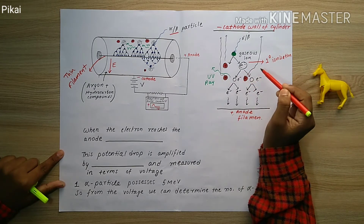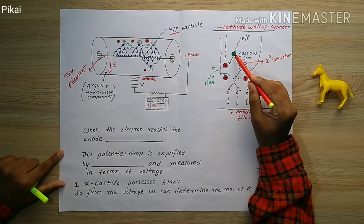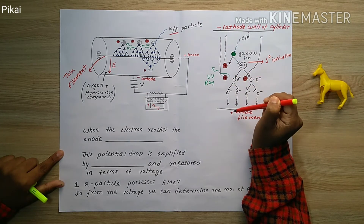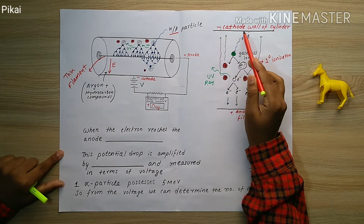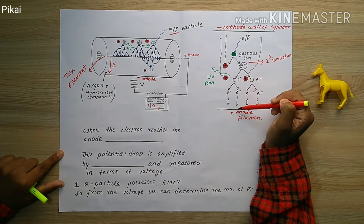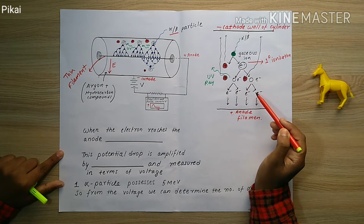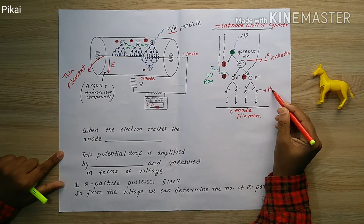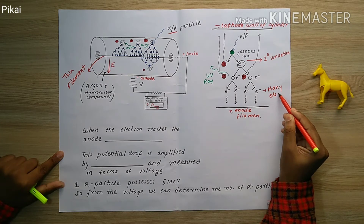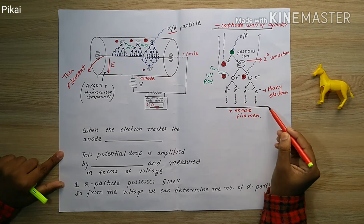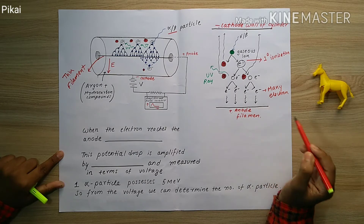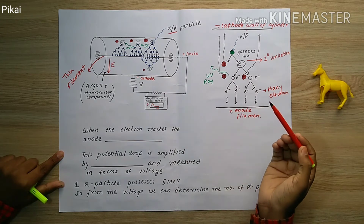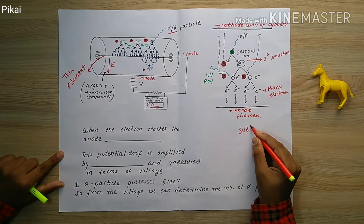After primary ionization, one cation and one electron are liberated. The cation, being positive, is attracted to the negative cathode wall of the cylinder. The negative electron moves to the positive anode filament. This chain of reactions causes excitation of electrons from one ion to another, so the number of ionizations increases hugely, liberating many electrons which all travel toward the positive anode filament.